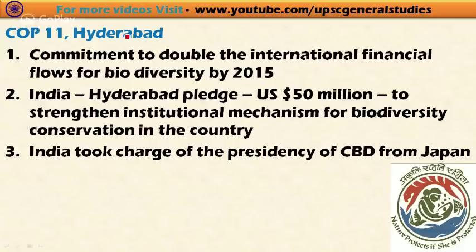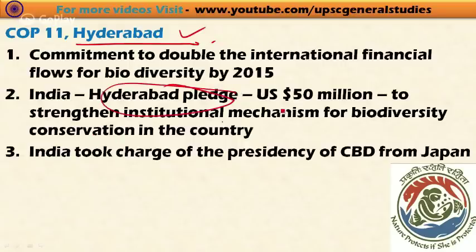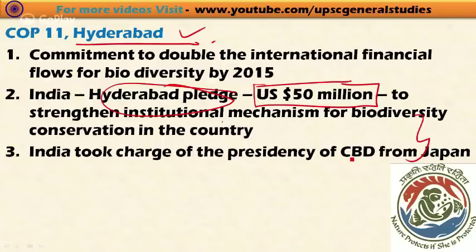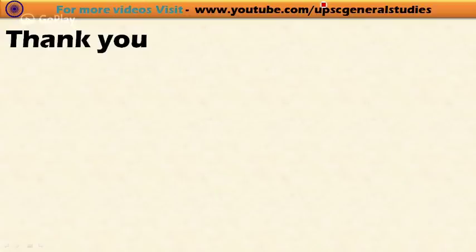At the 11th Conference of Parties held in Hyderabad, countries committed to double the international financial flows for biodiversity by 2015. India undertook a pledge called the Hyderabad Pledge, under which India set aside US $50 million to strengthen the institutional mechanism for biodiversity conservation in the country. India also took charge of the presidency of the Convention on Biodiversity from Japan.